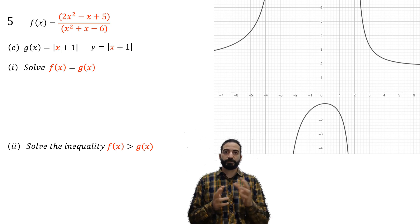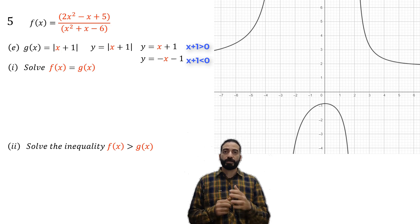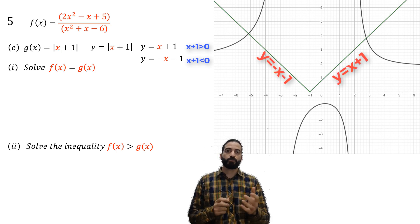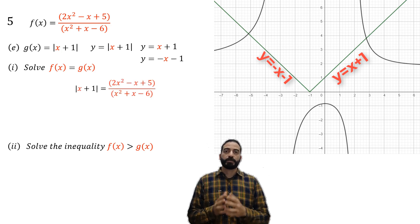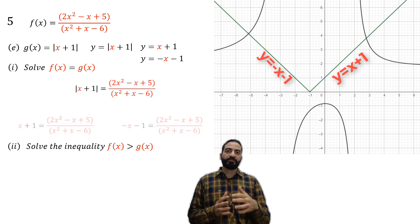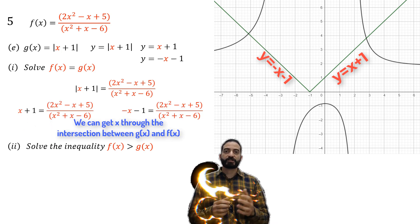Now we can draw y = x + 1 and y = -x - 1 like this. We want x + 1 equal to f(x), that is, we need to obtain the intersection between y = x + 1 and f(x).